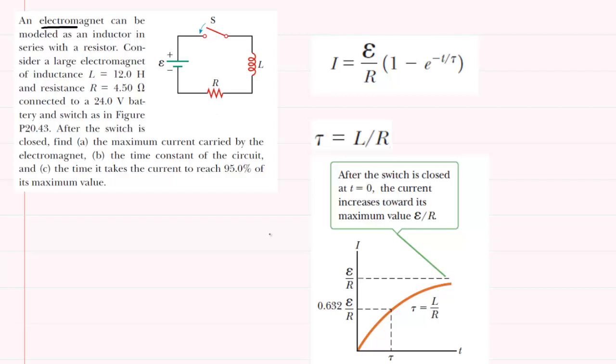In this question, an electromagnet is being modeled by an RL circuit. We know this is an RL circuit because it contains a resistor and an inductor, symbolized by R and L.